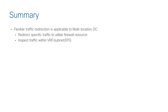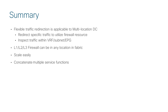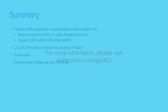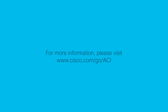In summary, ACI PBR advantages are applicable to multi-location datacenter design as well: flexible redirection using L1, L2, or L3 service devices, easy scaling using symmetric PBR, and multi-node service graph support. White papers are available on cisco.com — please refer to them for further detail.